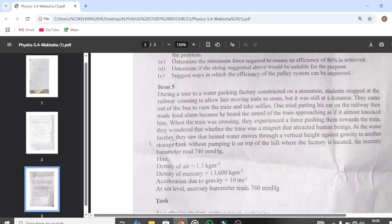At the water factory, they saw that heated water moves through a vertical height against gravity to another storage tank without pumping it, on top of the hill where the factory is located. The mercury barometer read 740 millimeters mercury. You can look at the hint: the density of air is this one, the density of mercury is also this one, acceleration due to gravity is also this one, and at sea level the mercury barometer reads this.